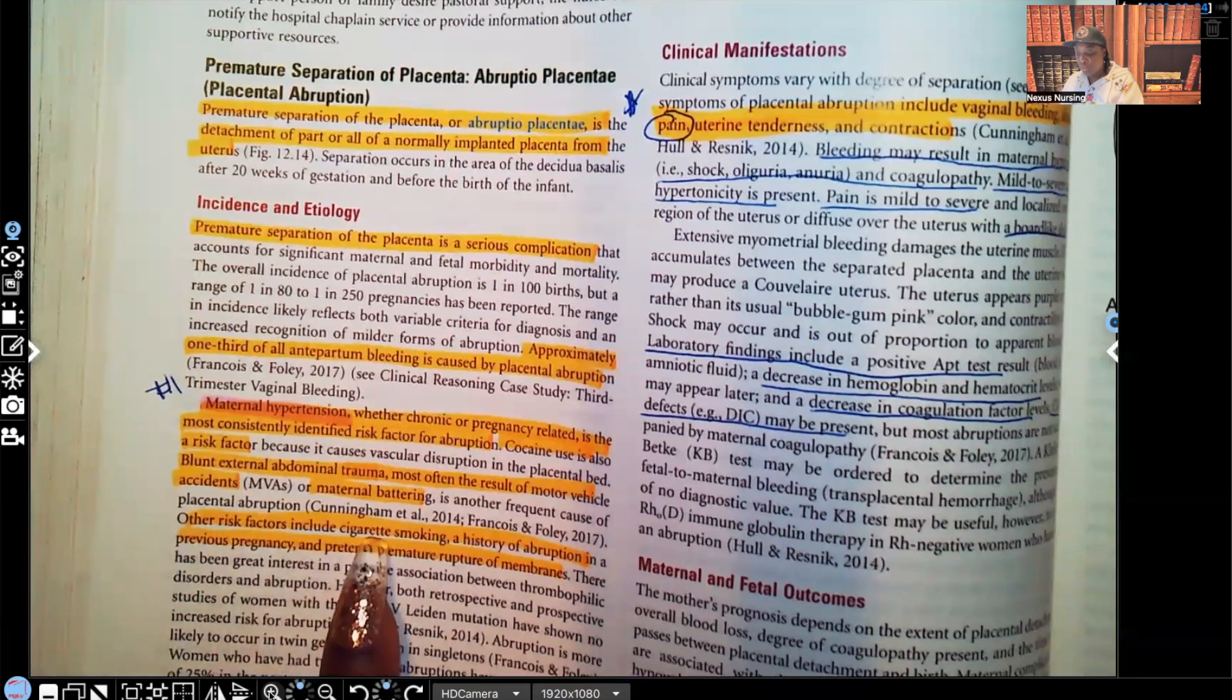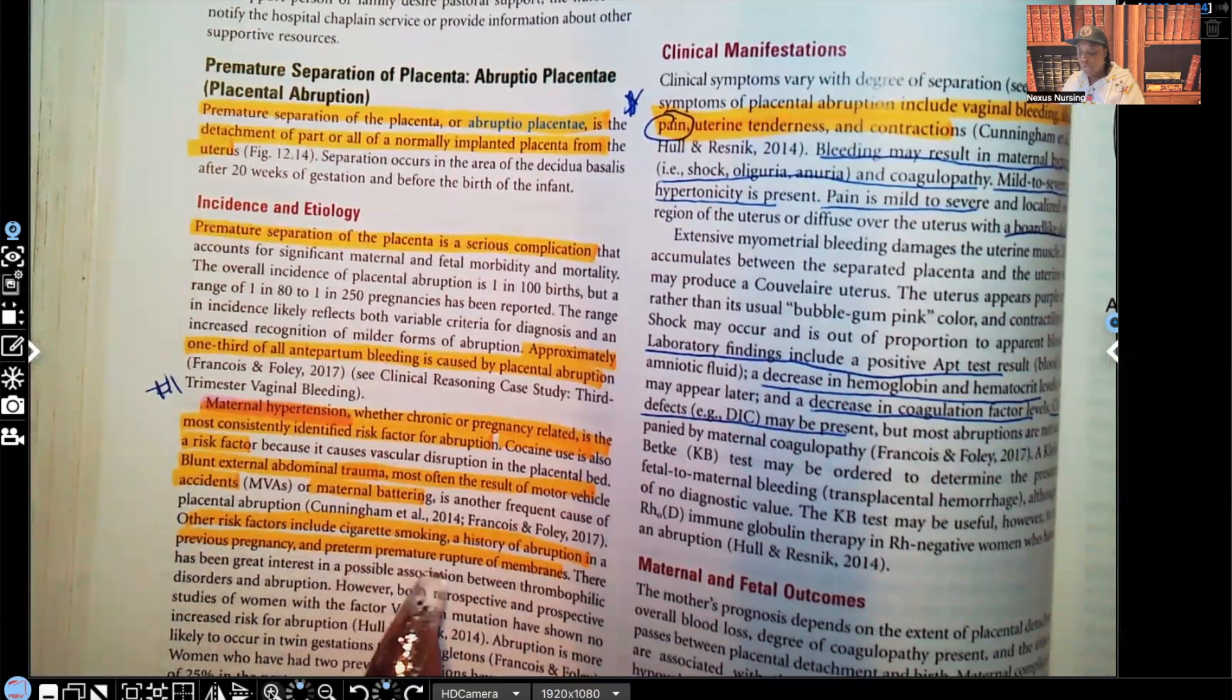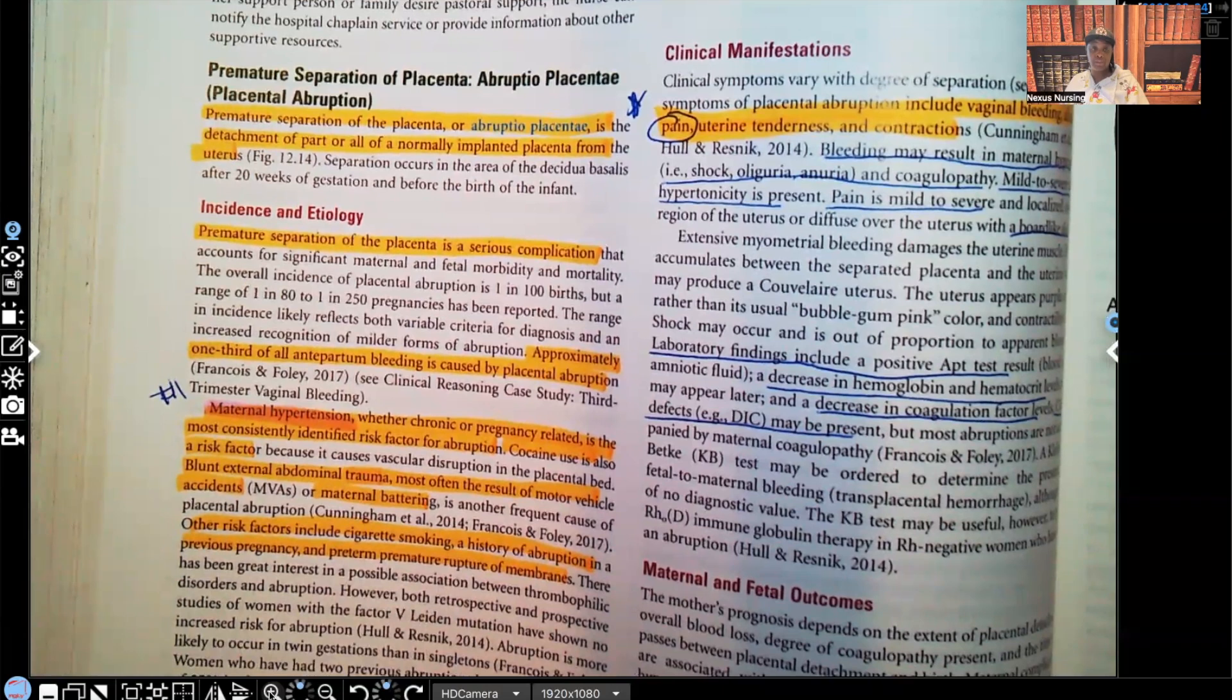Other risk factors include cigarette smoking, history of abruption in a previous pregnancy and preterm premature rupture of membranes. All of those are risk factors. You do need to know the risk factors for placental separation.